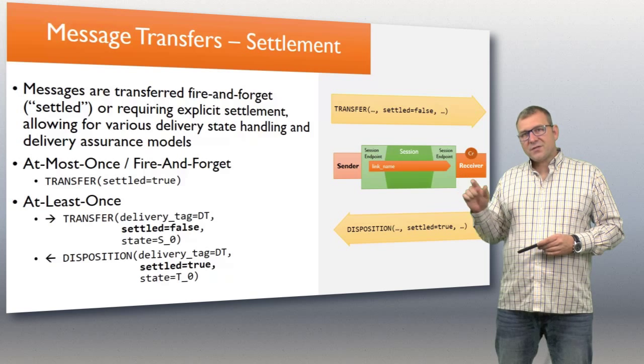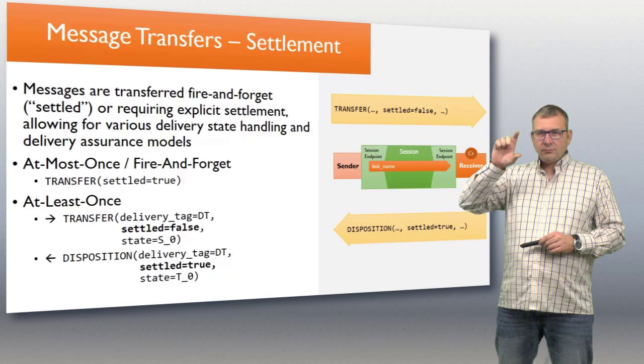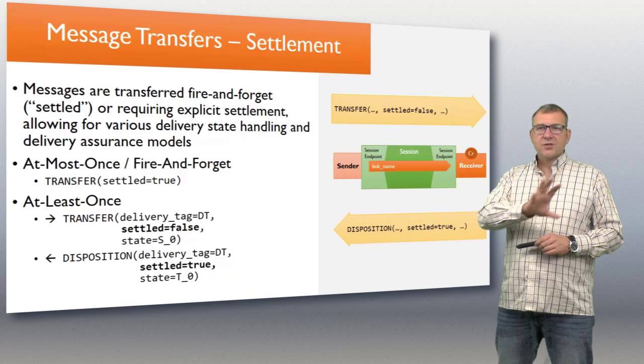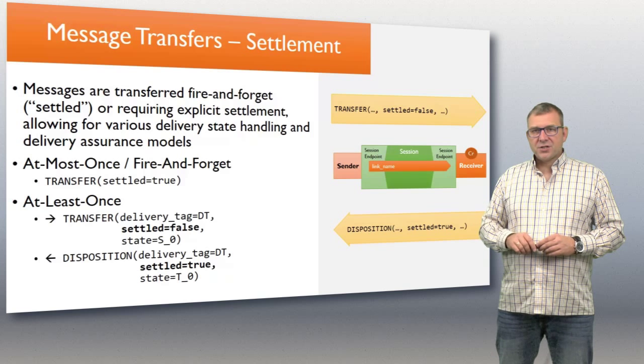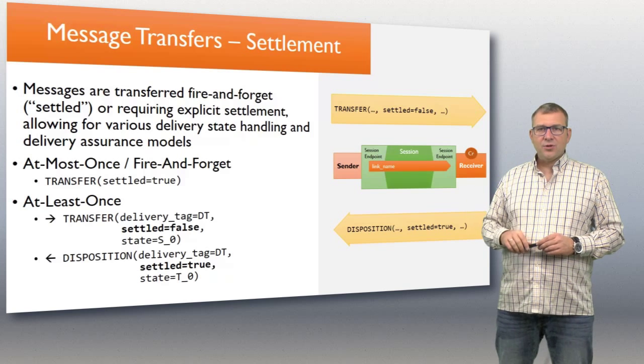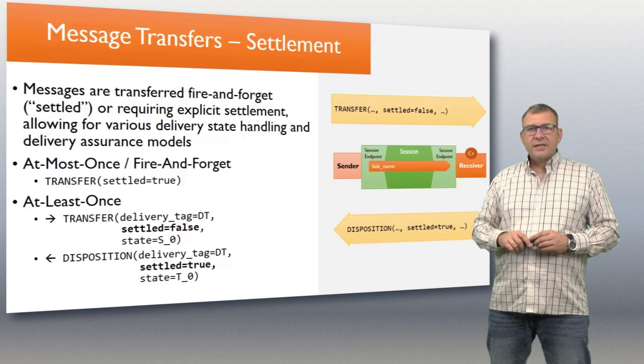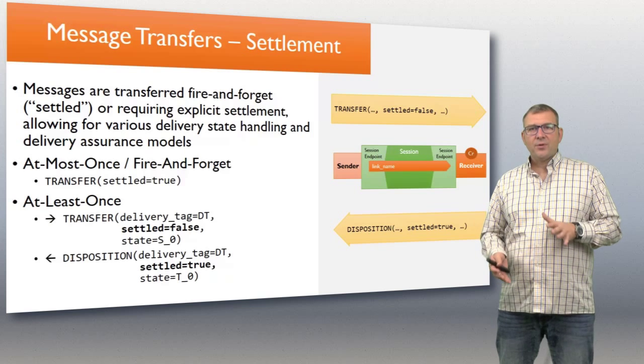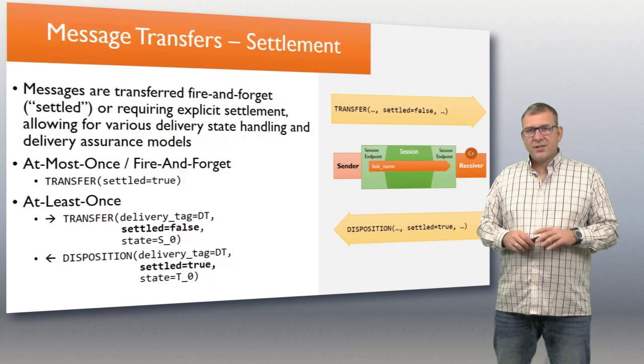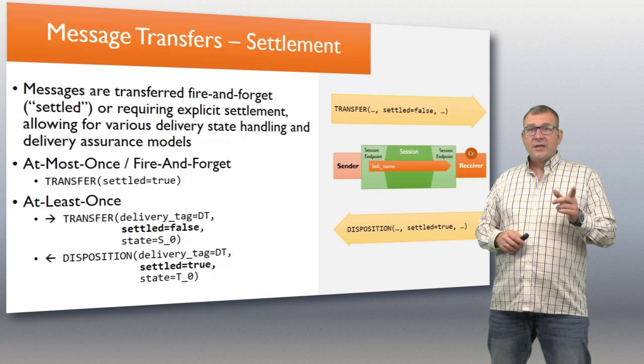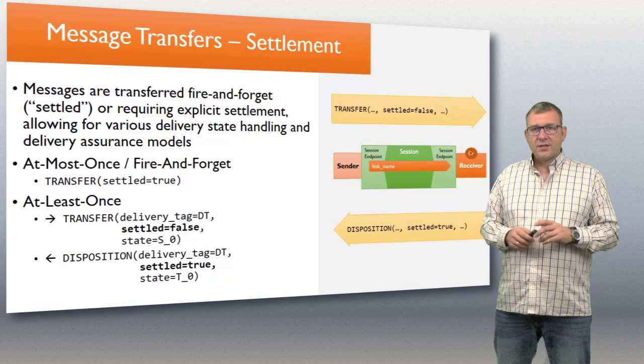The way the transfer works is you send a transfer frame, a transfer data element, which we're going to learn about how those are encoded in a later session. You send a transfer data element expressed in AMQP which contains all the parameters I show here. Then following that frame, following that preamble, is the payload body being sent. The exact format of the transfer frame you're going to see in the sixth module at the tail end of the encoding discussion.